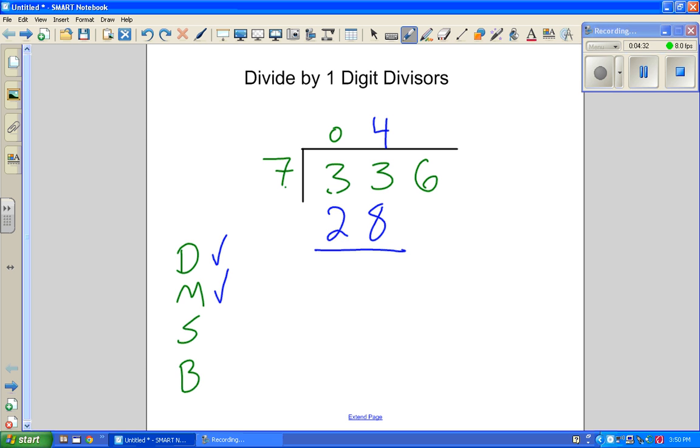Now I need to subtract. 3 minus 8 I can't do. I need to borrow. Now I have 13 minus 8, which is 5. 2 minus 2 is 0. I took care of my subtract. Now I need to bring down. Now I have 56.